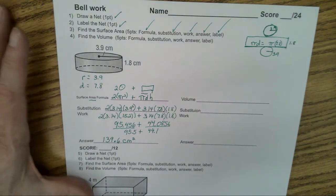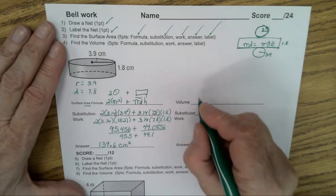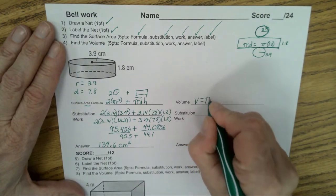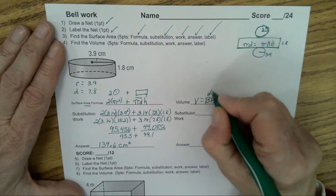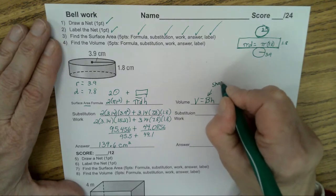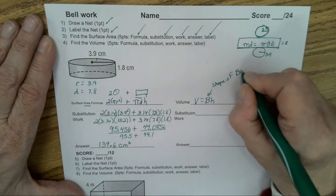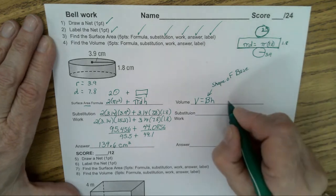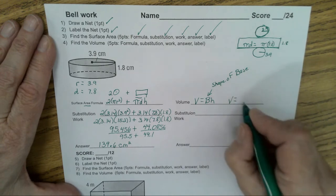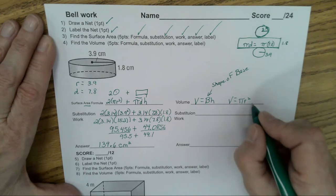Now, on volume, the formula is big B times the height. Well, big B represents the shape of the base. What's the shape of the base in the cylinder? It's a circle, right? So the volume for a cylinder is πr², that's the area of a circle, times the height.